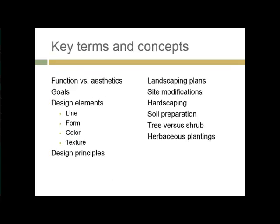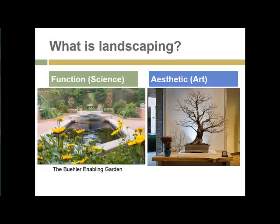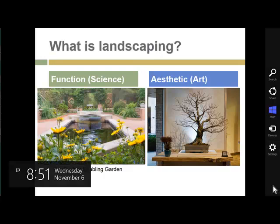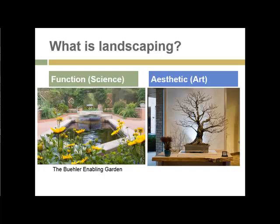Key terms and concepts are listed here; we'll get into those as we move forward. So what is landscaping? Landscaping is a human adaptation of the land, especially the land surrounding our built environment, and it is comprised of functional aspects and aesthetic aspects.